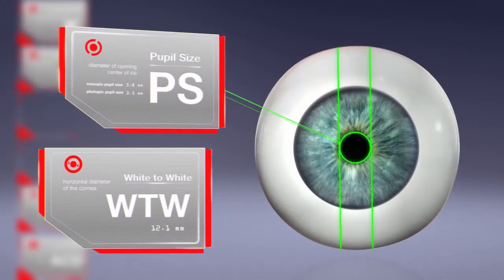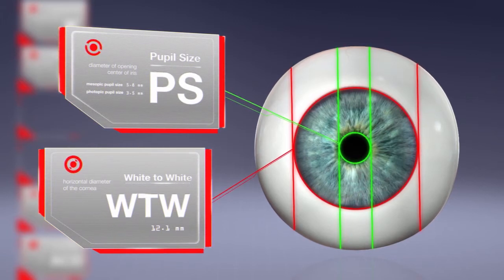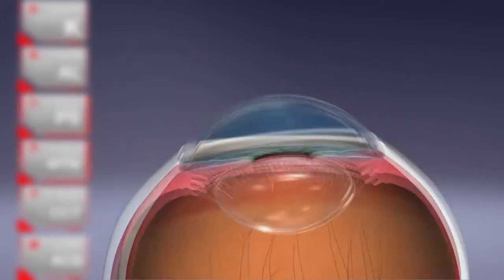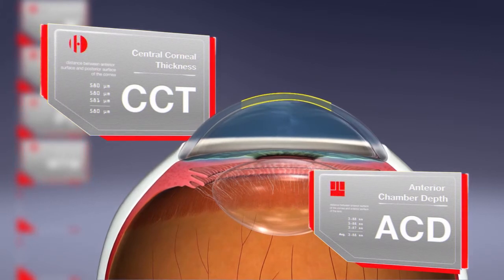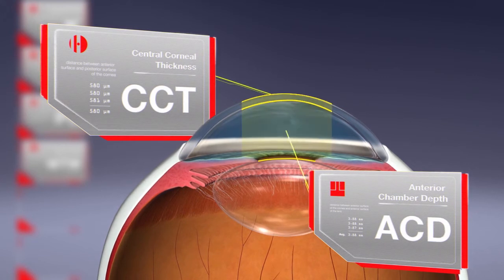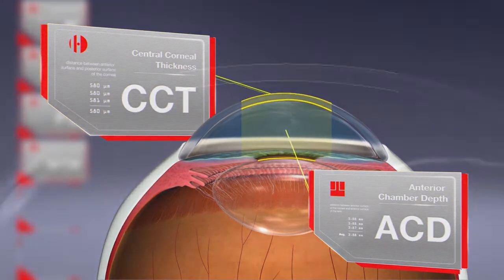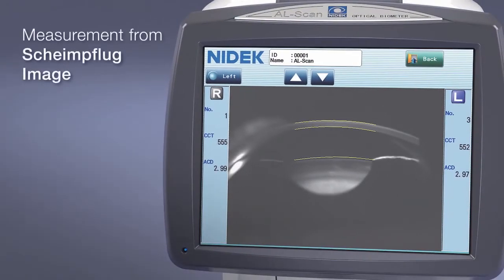Pupil size and white-to-white distance are measured using the captured image. With Scheimpflug imaging of the anterior eye, accurate measurements of central corneal thickness and anterior chamber depth can be obtained, and those measurements can be verified on screen.